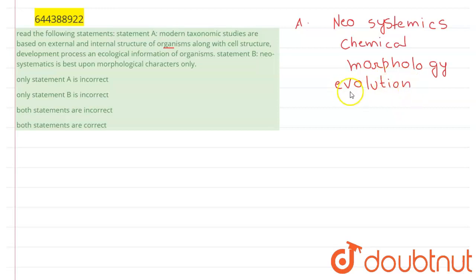It evolved in 1940. The scientist who formulated this neosystematics is Julian Huxley. Julian Huxley in 1940 proposed this system, and this is the most efficient taxonomical classification.